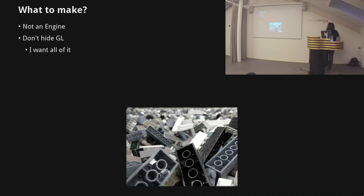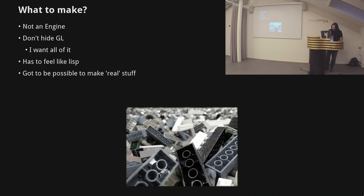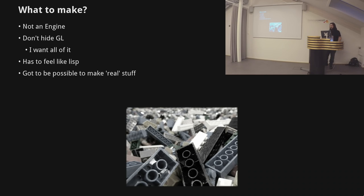So I had a language — what to make with it? I knew I wasn't going to make an engine, because engine had become synonymous with 'stuff I can't think past.' I actually wanted to learn GL. It had to feel like Lisp, like it was native to the language. And it had to be possible to make real stuff. Watching GDC talks and seeing how much hard work really smart people were putting into getting things to run at 60 frames a second meant I couldn't be anal about being pure — I can't go pure functional, and I can't use parts of Lisp I won't be able to optimize later.